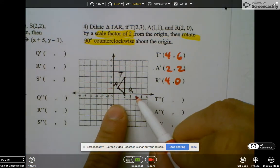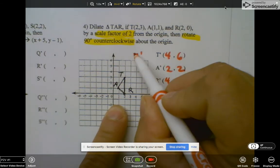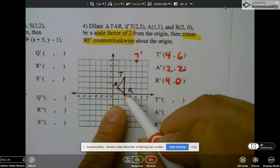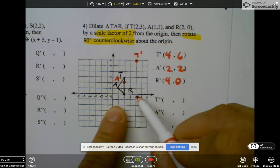So I'm going to go (4,6) is here - this is T prime. The next one is (2,2) - A prime. And then (4,0) right here is R prime.